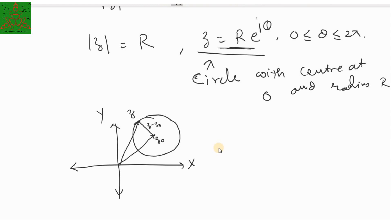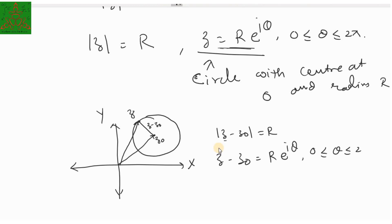For any point z on this circle, z minus z₀ is equal to capital R. So we can write z minus z₀ equals r·e raised to iθ, where θ takes any value between 0 to 2π. So any equation of the circle having center at z₀ and radius r can be written as this formula. This is the parametric representation of the circle with center at z₀ and radius r in the positive orientation.